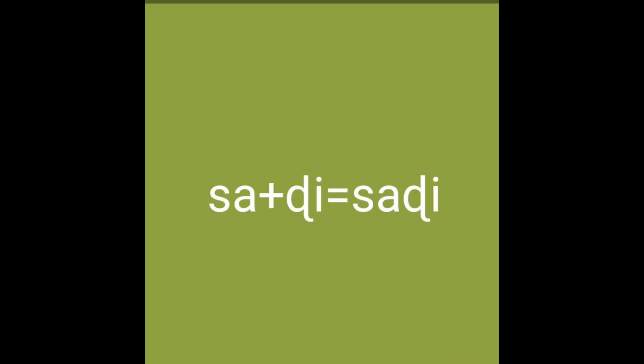'S' and 'D' will give us 'sedi'. Sedi is the currency unit of Ghana — sedi. Another word: 'sadi' — and this is the sadi that we are talking about.